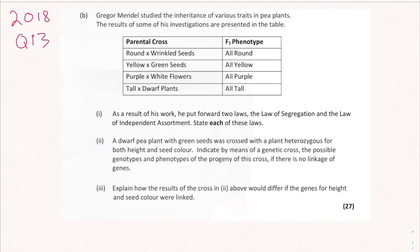So we're crossing a dwarf pea plant with green seeds with a plant that's heterozygous for both height and seed color, and we need to indicate by means of a genetic cross the possible genotypes and phenotypes. We need to figure out what the other color and other height are — is it dwarf and tall, dwarf and medium? We go back to our reference box.